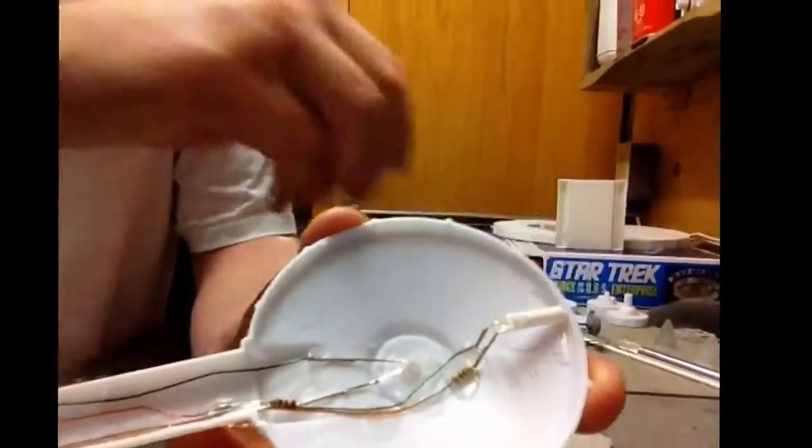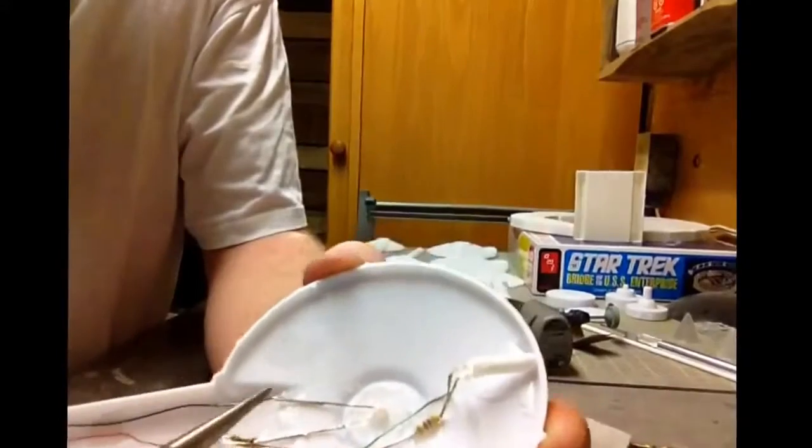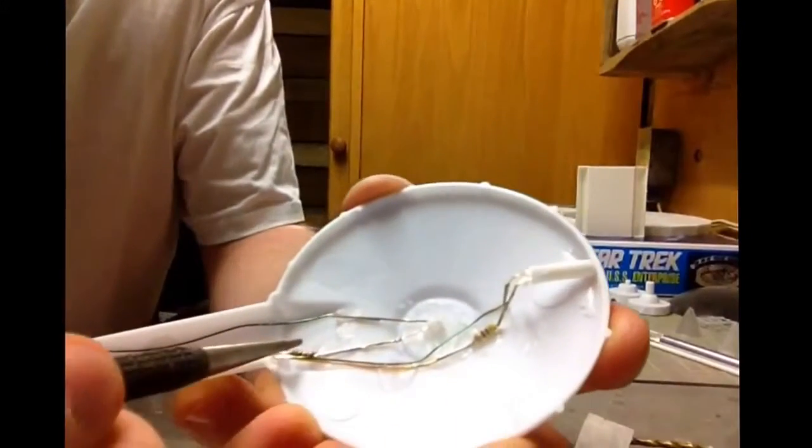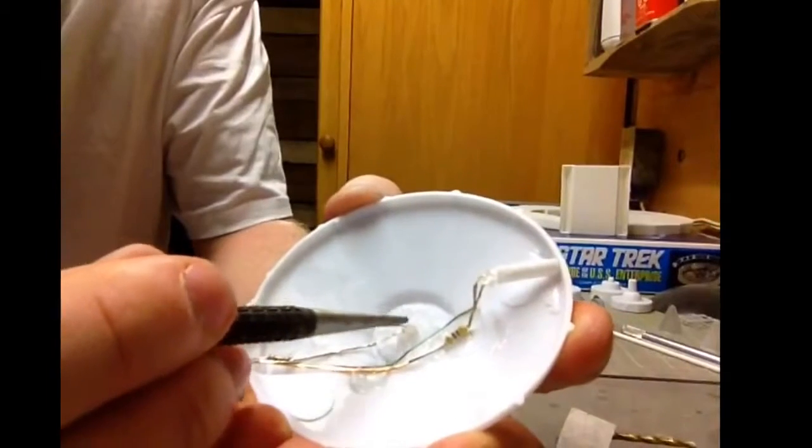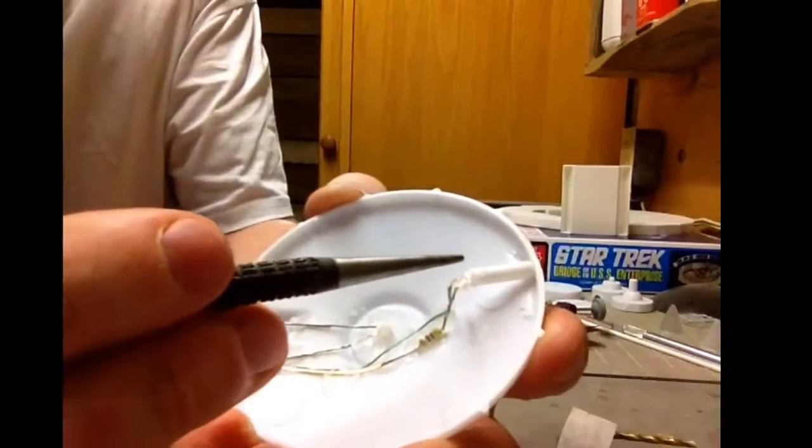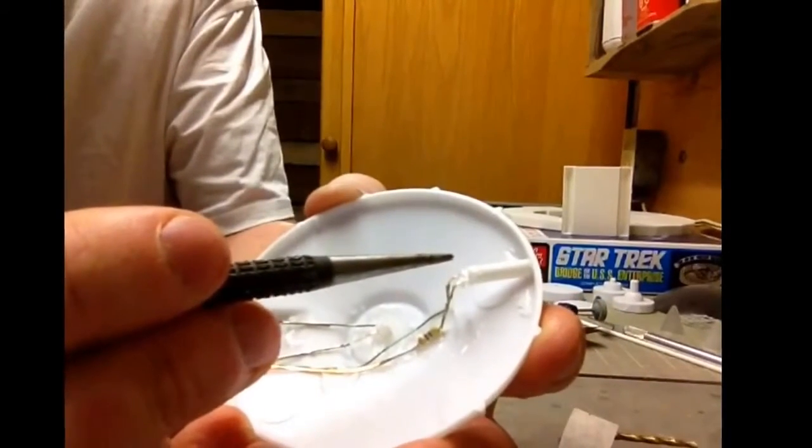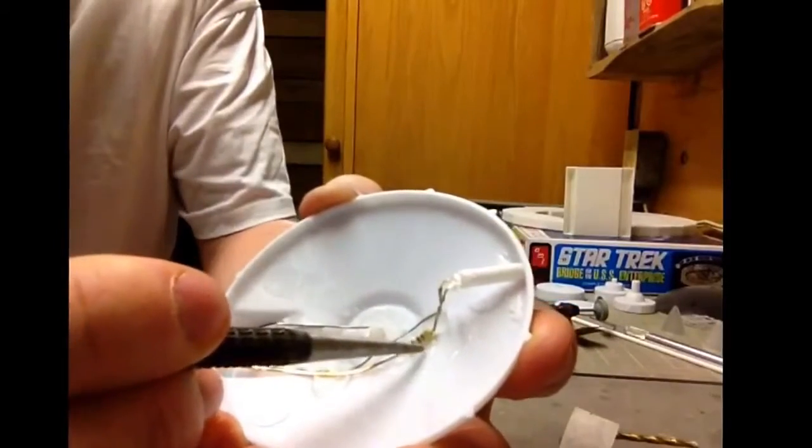I'm running a 220 ohm resistor for the warm white LED, and in this case the red one which runs at lower voltage I'm actually running a 470 ohm resistor.